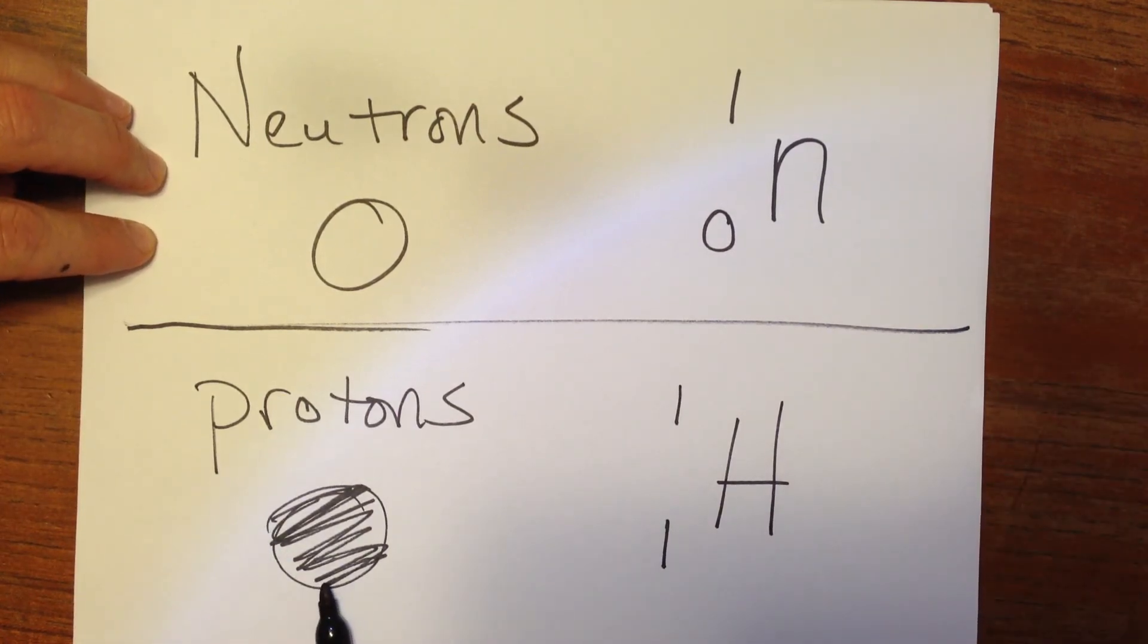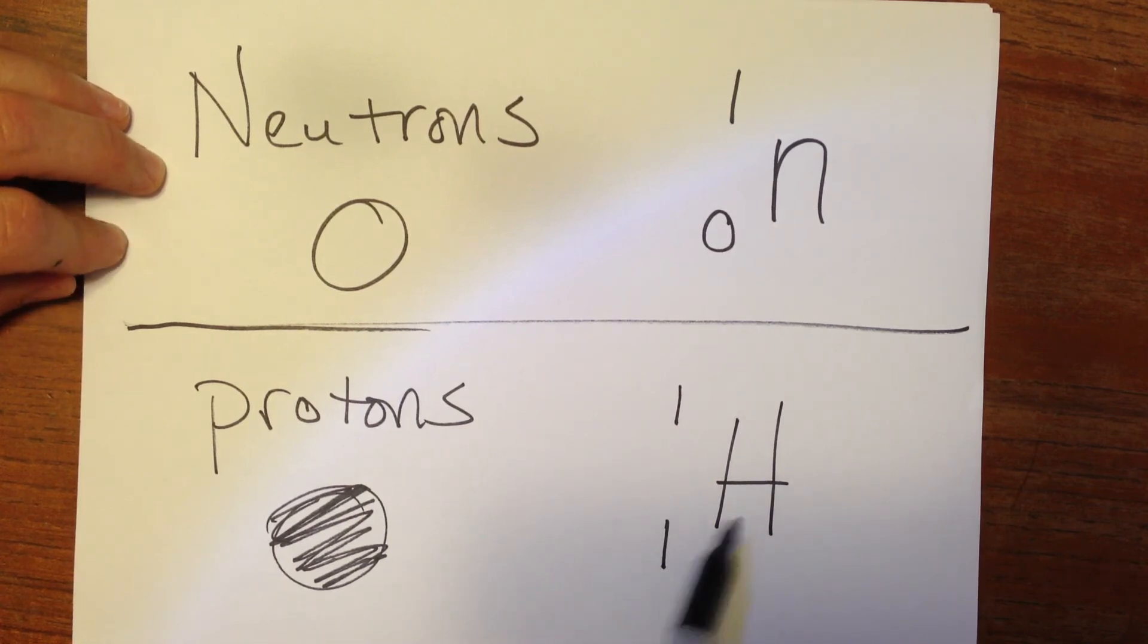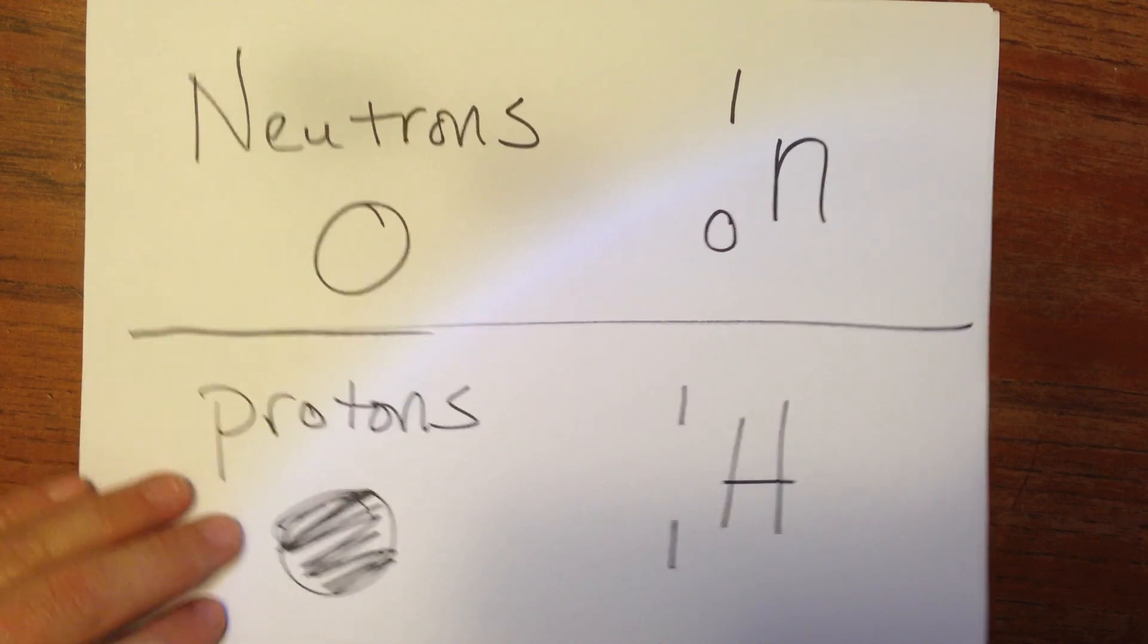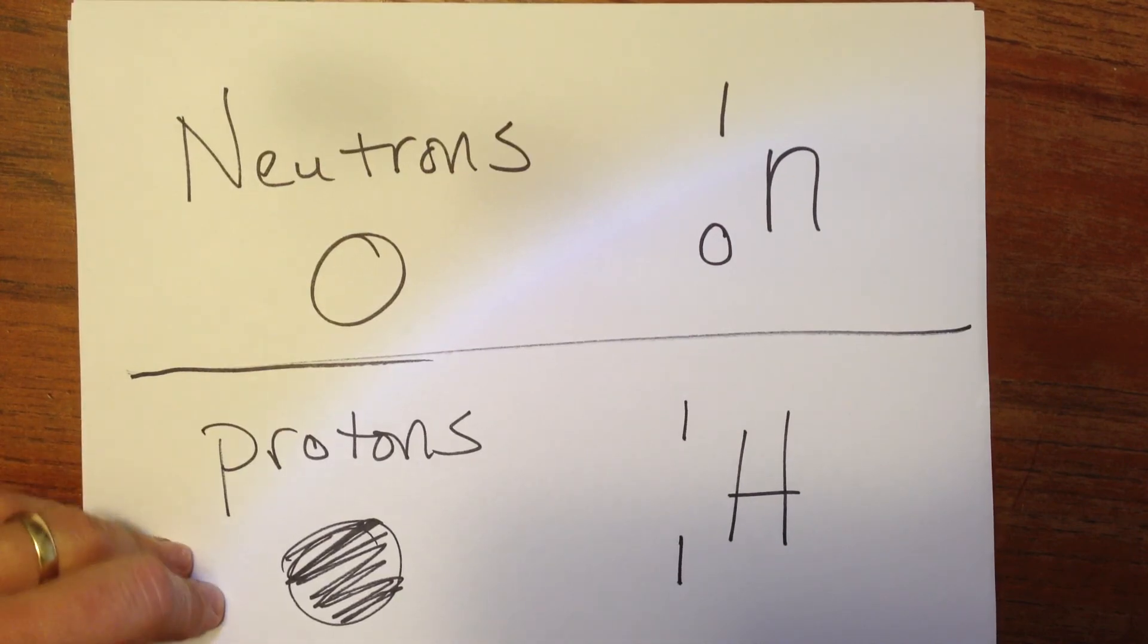And for a proton, it would be 1 proton and a mass of 1, of course. And element number 1 is hydrogen. So those are some of the denotations of how we will show some of these as we go through.